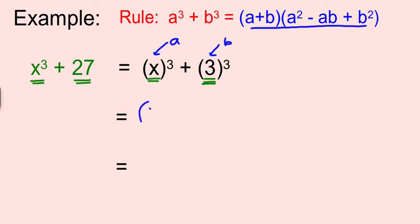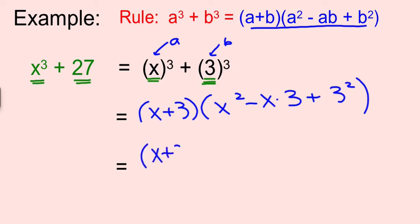So now it's x plus 3, x² minus x times 3 plus 3². Now I'll clean it up. Negative x times 3 is negative 3x. And then 3 times 3 is 9. And there it is in factored form.